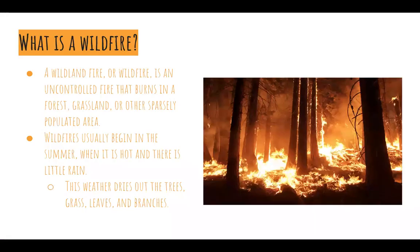So let's start the presentation. What is a wildfire? A wildfire is also known as a wildland fire, and it is an uncontrolled fire that burns in a forest, grassland, or other sparsely populated areas. Wildfires usually begin in the summer when it is hot and there is very little rain. This weather dries out the trees, grass, leaves, and branches. Since there are a lot of trees, leaves, and branches in the forest — like in the picture we see right here — it's more vulnerable to fires because of how dry it is.